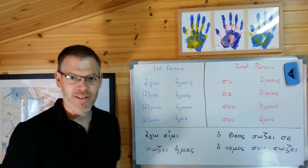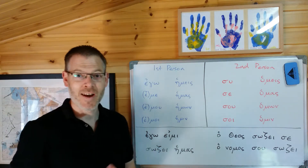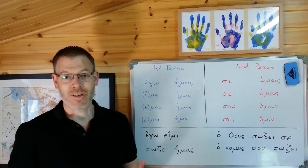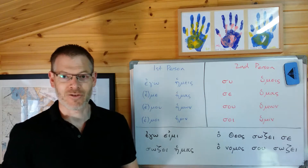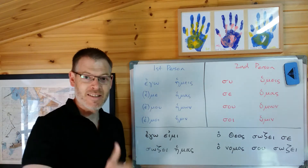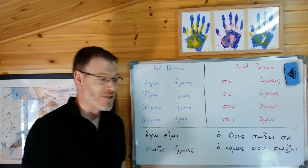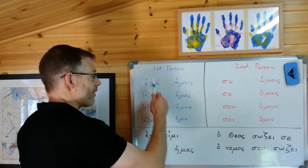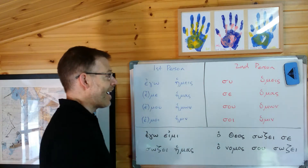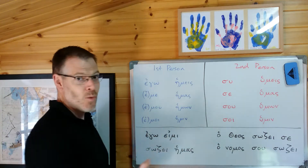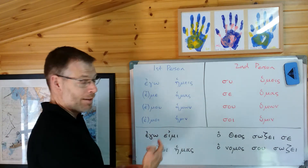You've done the third person pronoun already - autos, autos, auton, autoo, autow - and you know that's masculine, feminine, and neuter. Well, they've got the first person and second person pronouns here, which go a little bit like this. First person is me, or I, or us, or we.